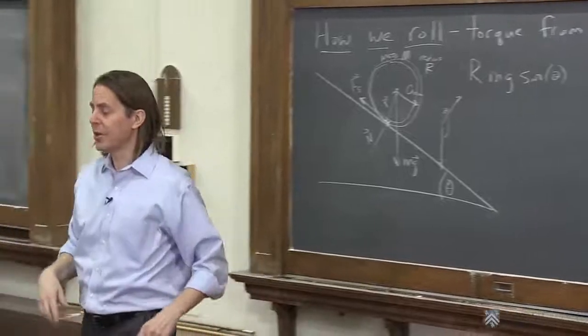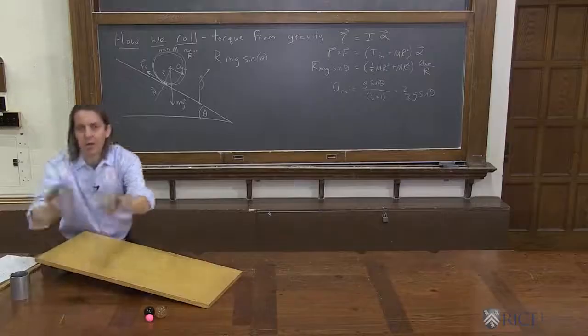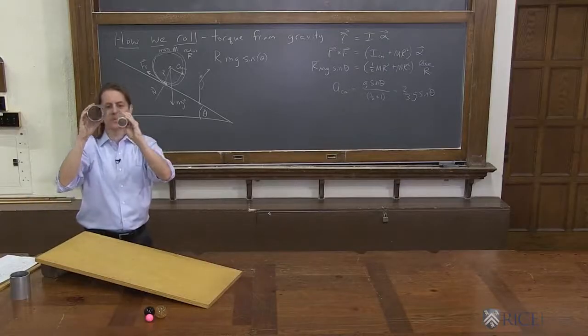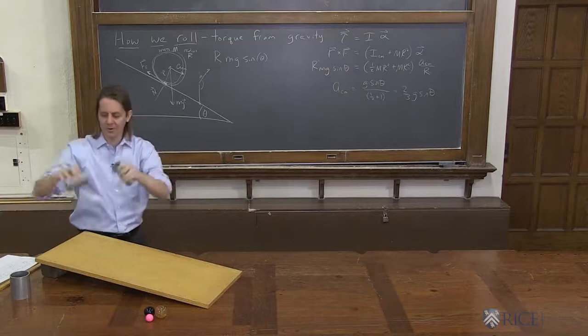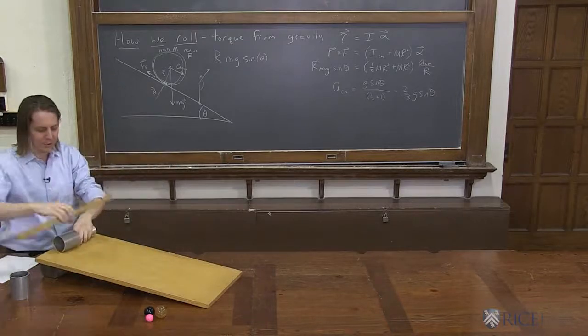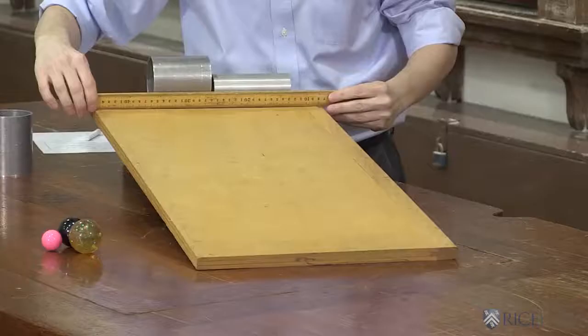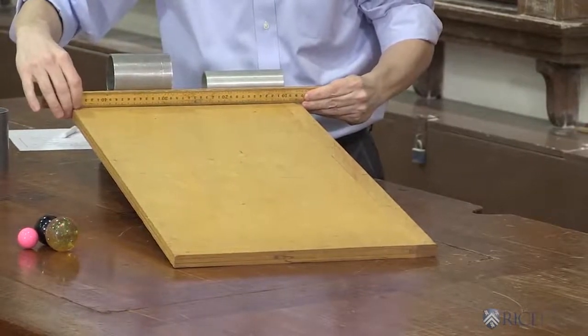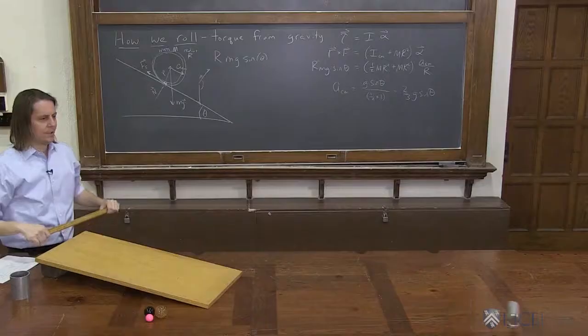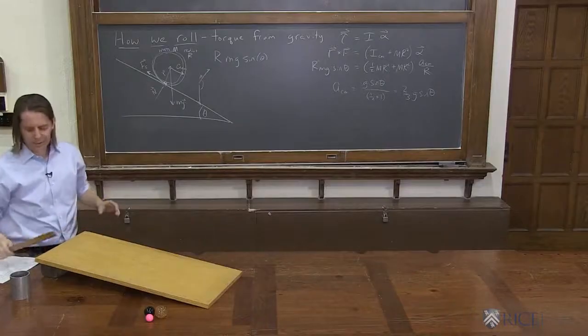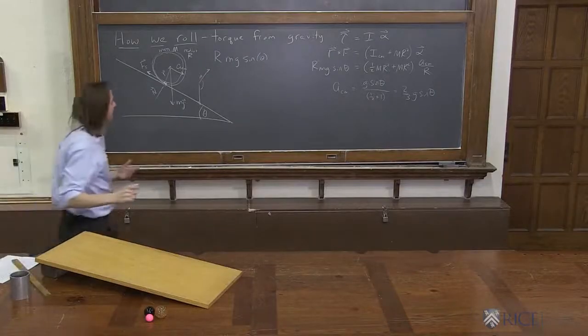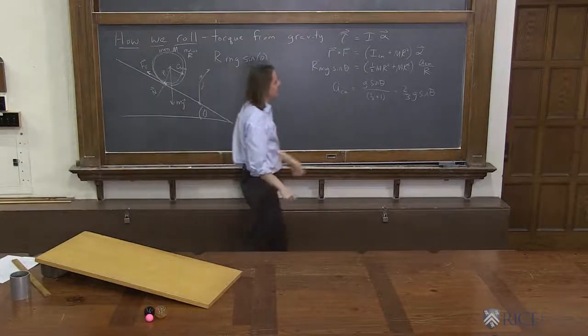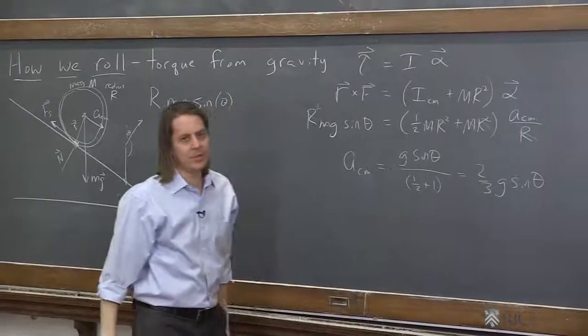So we can confirm that. We can look at a couple of empty cylinders here. Different sizes. I think they're both aluminum, but they are different sizes. So is it true for every shape? Or is it just true for a solid cylinder? Let's find out. And go. And boom. Exactly the same. Hit it exactly the same time. They just accelerated a little slower, one-half g sine theta.